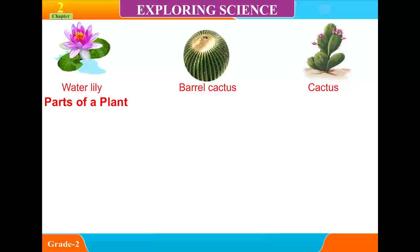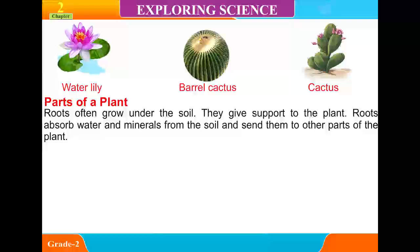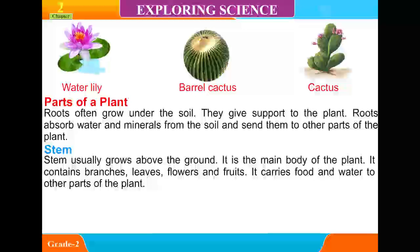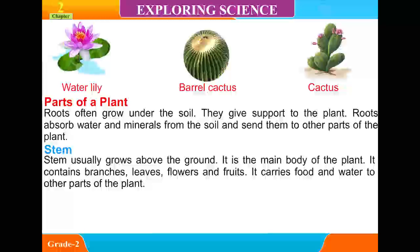Parts of a Plant. Roots often grow under the soil. They give support to the plant. Roots absorb water and minerals from the soil and send them to other parts of the plant. Stem usually grows above the ground. It is the main body of the plant. It contains branches, leaves, flowers and fruits. It carries food and water to other parts of the plant.